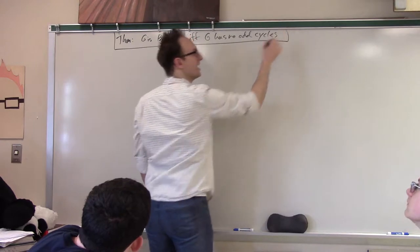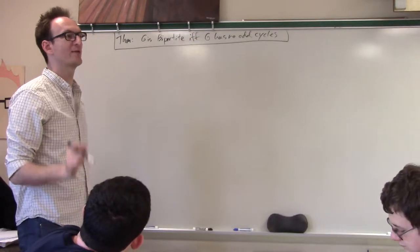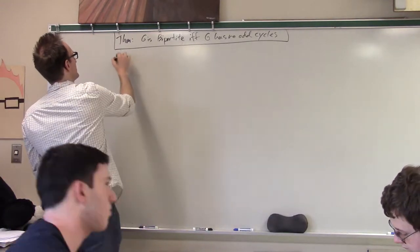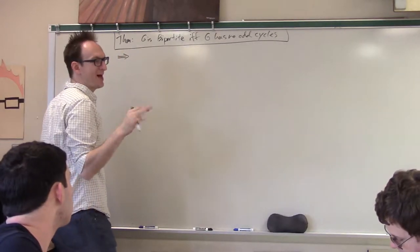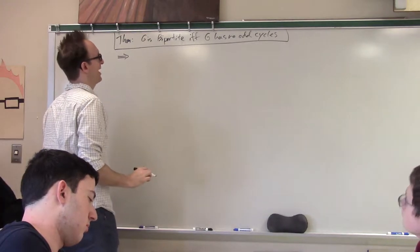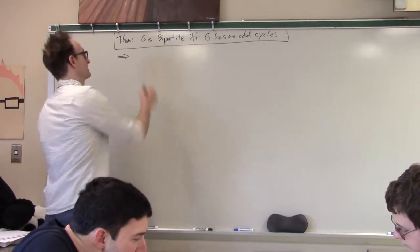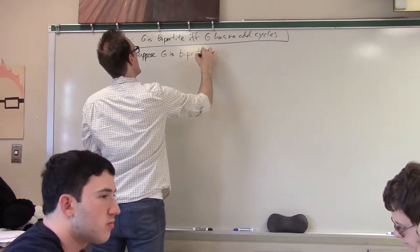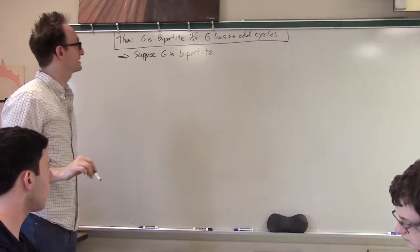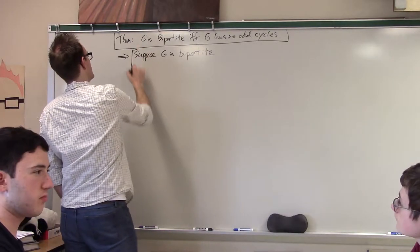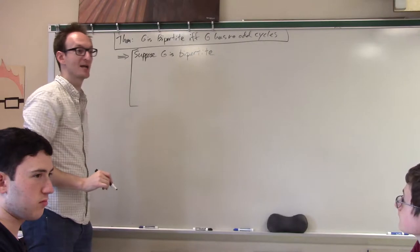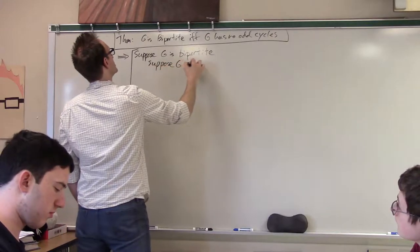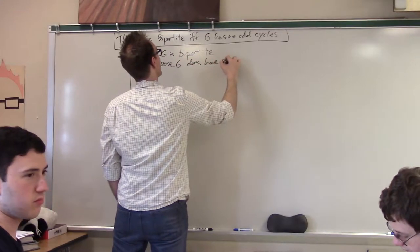Now this might sound familiar because half of this — the easy direction — was one of the homework problems from last class which we went over, and which is easy. We went over it on Monday. So first we shall do the forward direction, and I'm going to be semi-hand-wavy but I also know how to do this rigorously if required. So suppose G is bipartite. I would like to show that G has no odd cycles. Well, just suppose that it does have an odd cycle and that will lead to a contradiction. So suppose G does have an odd cycle.